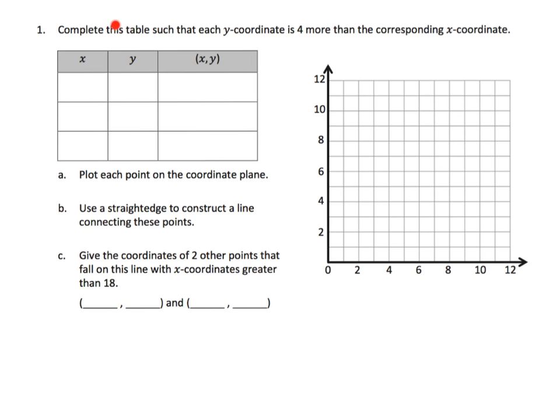What we've got here says complete this table such that each y-coordinate is 4 more than the corresponding x-coordinate. So that means we have to choose some x-values, and then the y-coordinate is going to be 4 more than whatever that x-value is that I chose.